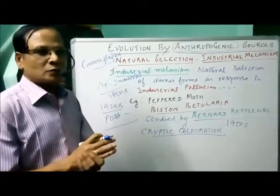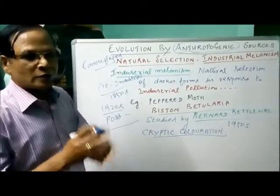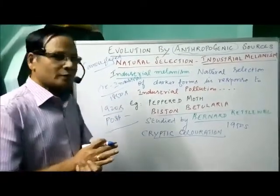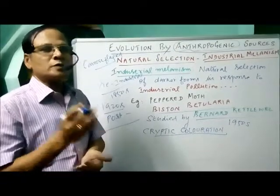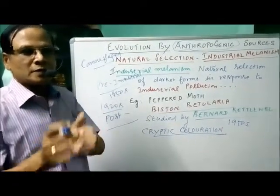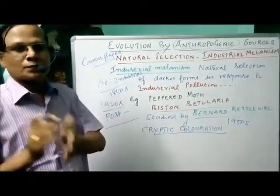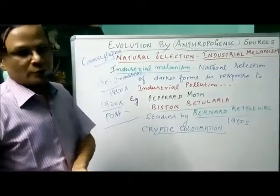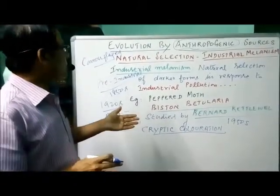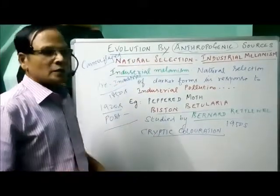Even in the case of DDT: we use DDT to kill mosquito larvae, and now we have developed mosquitoes which are resistant to DDT. This is an example of anthropogenic evolution — the formation of new species because of human activities.